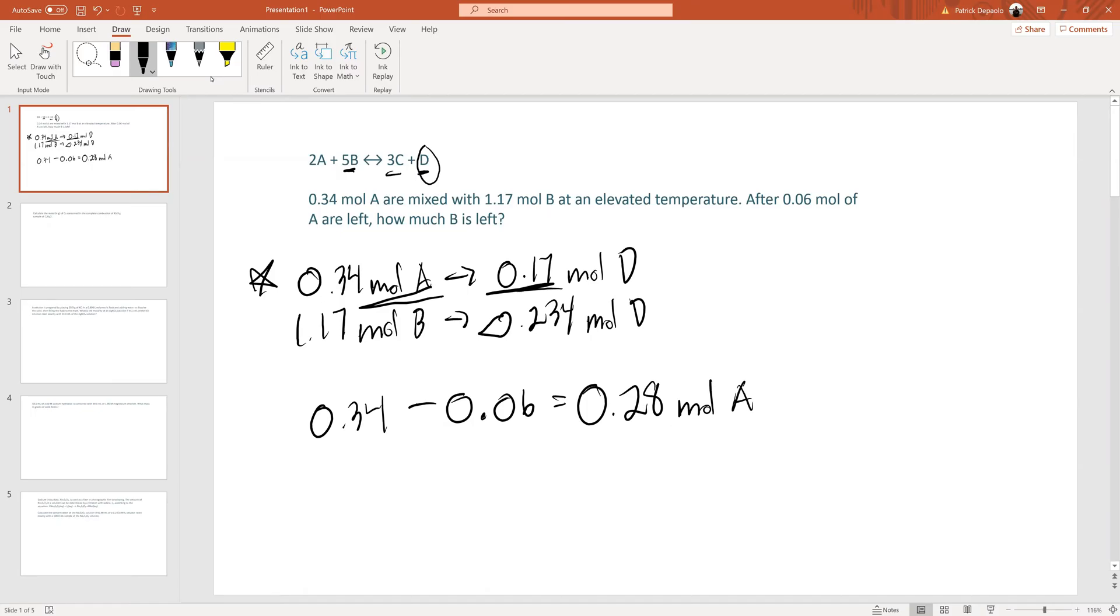We want to figure out how many moles of B are left after this amount of A reacts. We can do the same kind of ratios, but just go forwards and then backwards. If we have 0.28 moles of A that we know is going to react, our question is, this would produce how much of D? Since we know that 2A makes 1D, we would divide it by 2 and we get 0.14 of D.